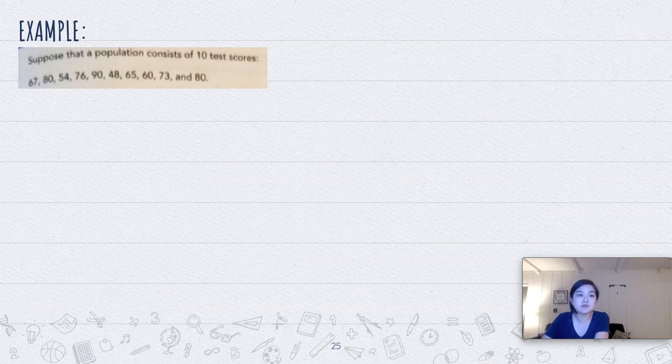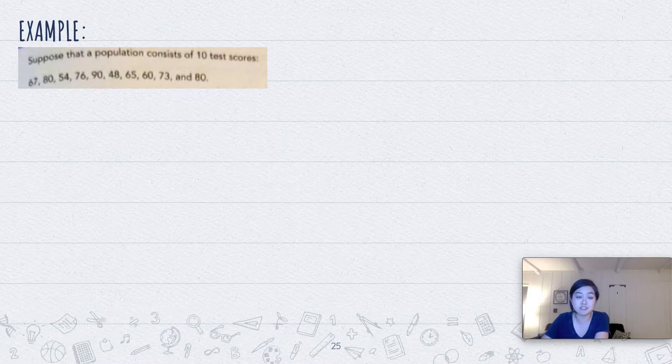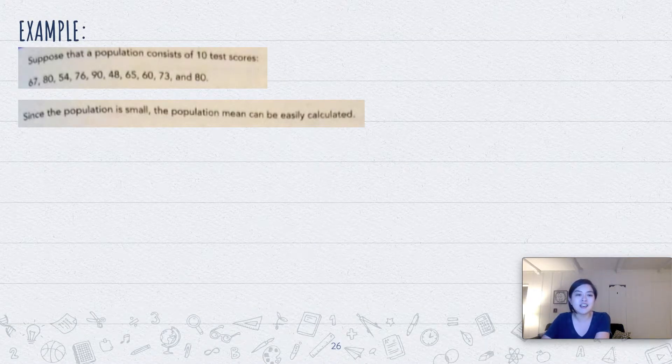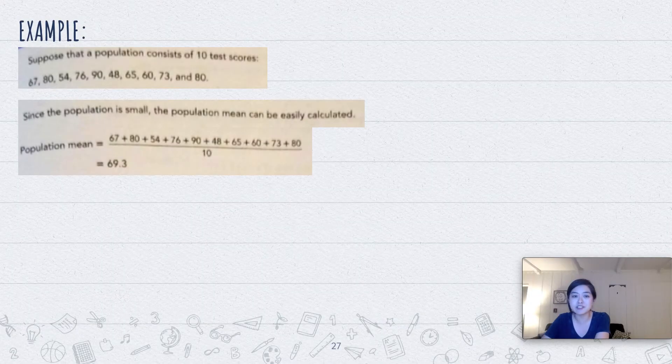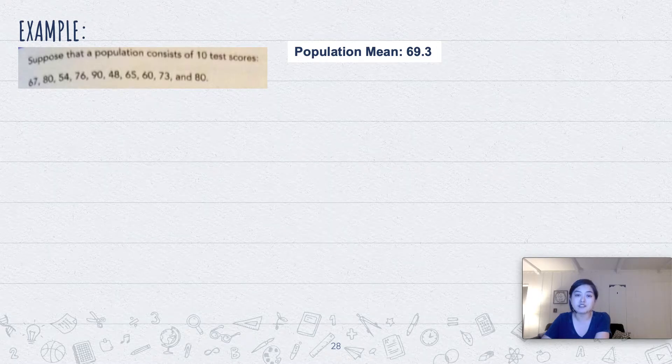Let's look at this example. Suppose that a population consists of 10 plus 4, as you see there: 67, 80, 54, 70, 60, 90, 48, 65, 60, 73, and 80. And this population is small, so we can calculate the mean easily and the population mean is 69.3. So I wrote that back up here on the screen: the population mean is 69.3.